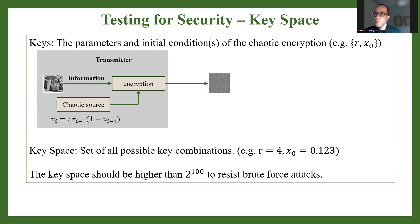Any possible combination that I can consider is the key size, which is the keyspace of the encryption design. For example, let's say I use parameter r equals 4 and the initial condition 0.123. That's a specific set of keys.